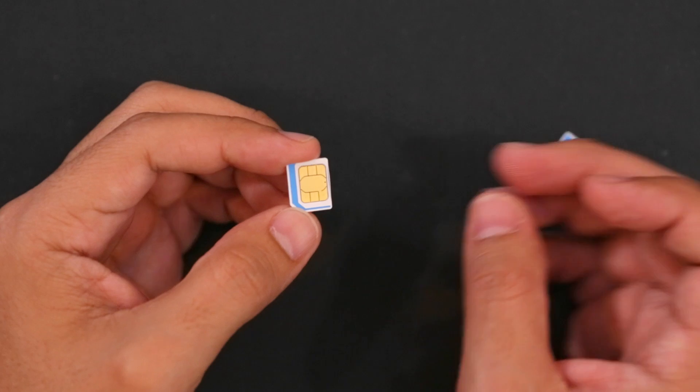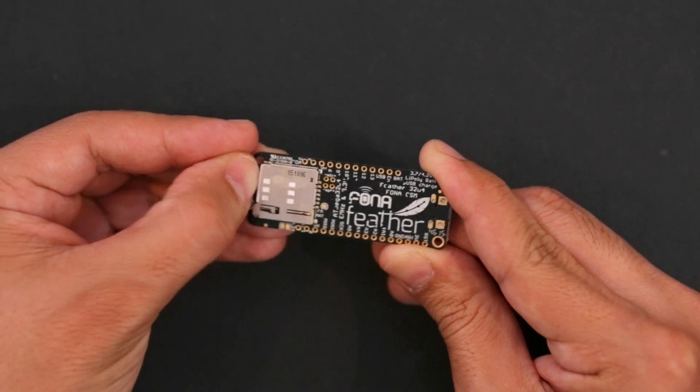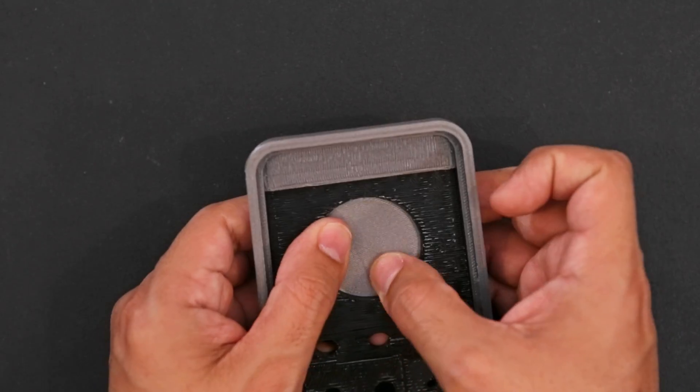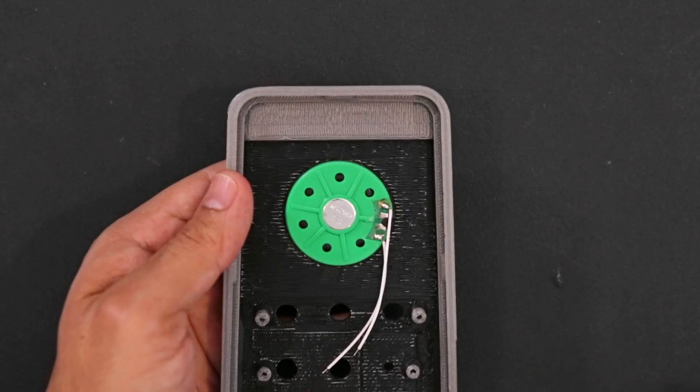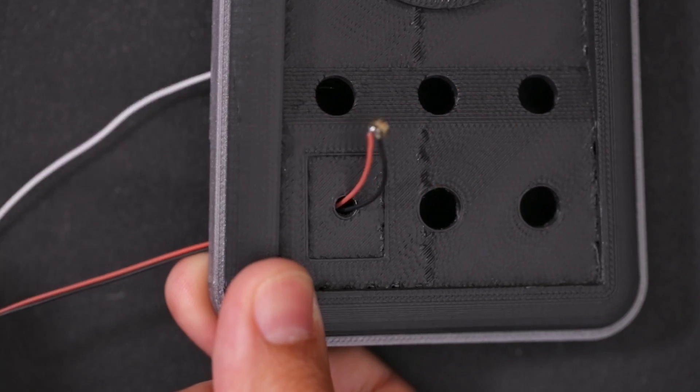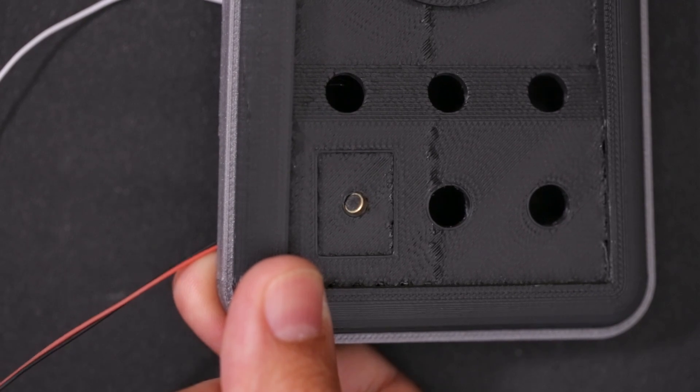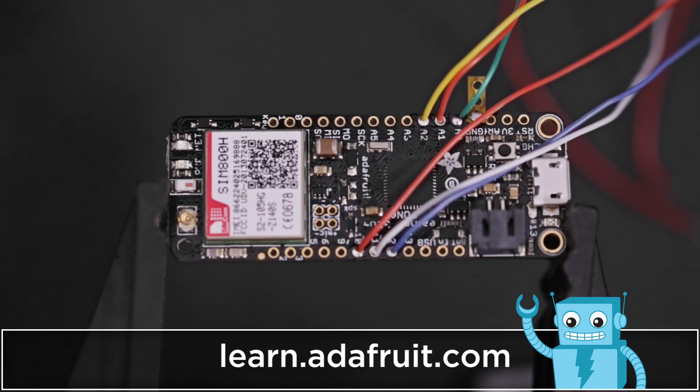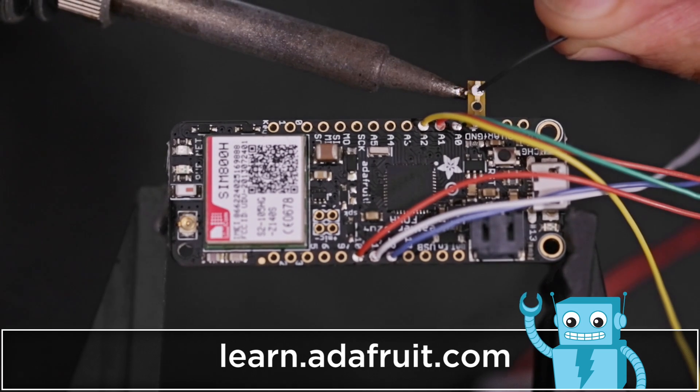Acquire any 2G SIM card with a voice plan so you can make and receive calls. You'll find the parts and components are engineered to easily snap-fit together. Reference the guide hyperlinked in the description below for a full circuit diagram.